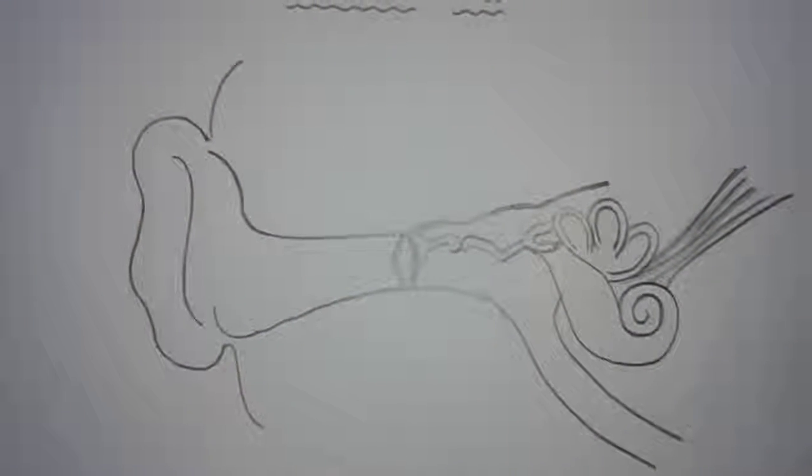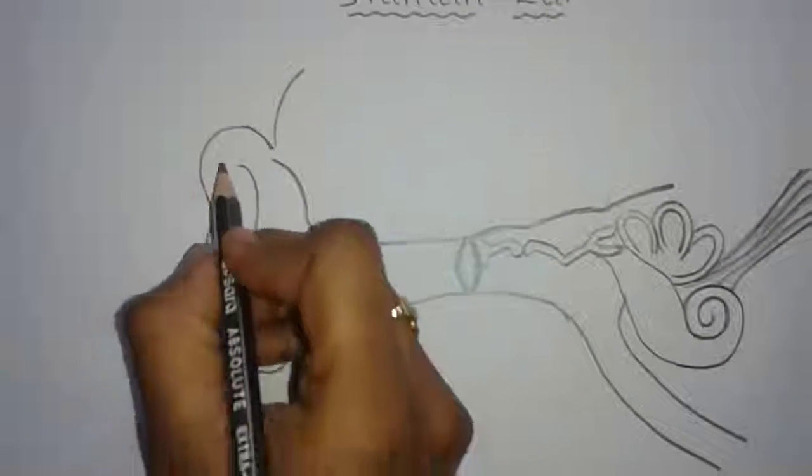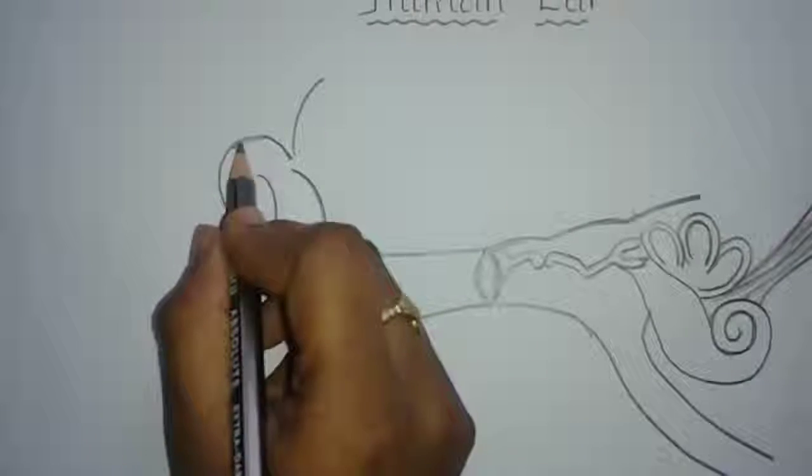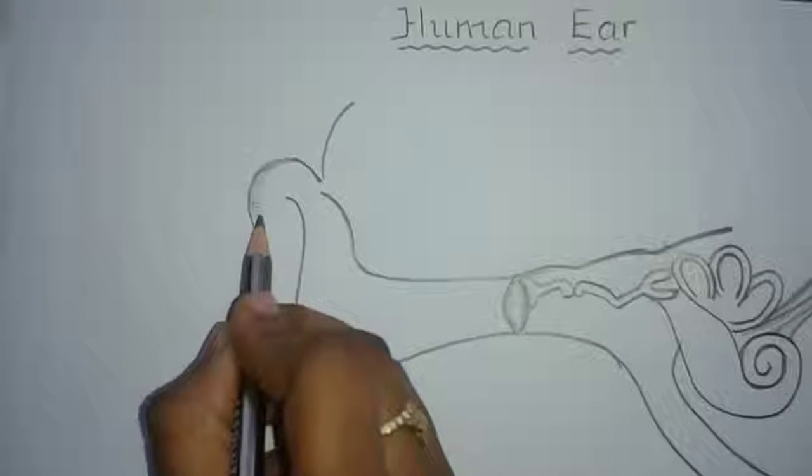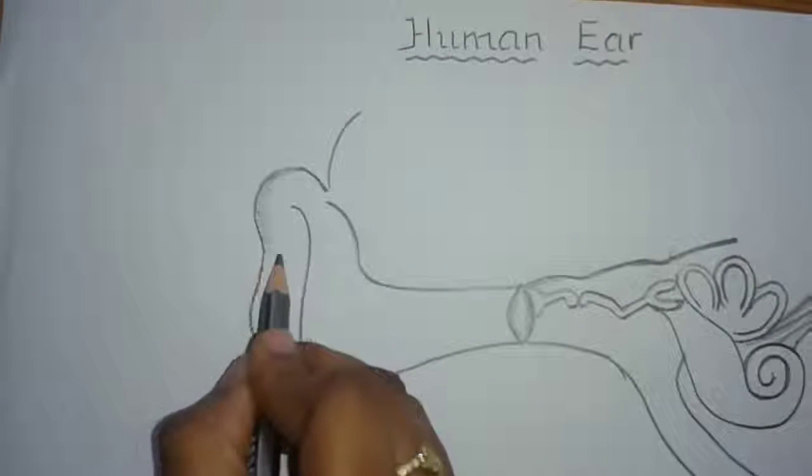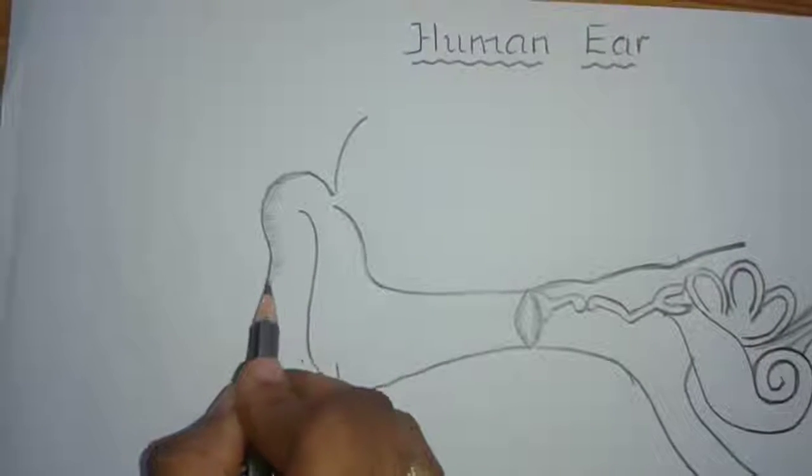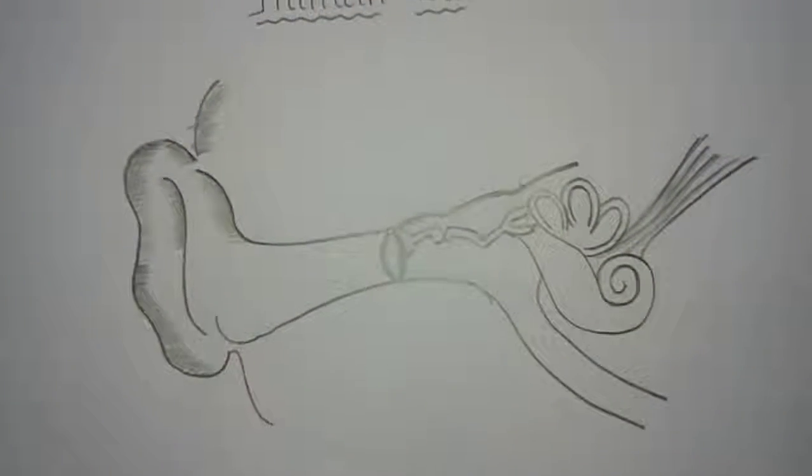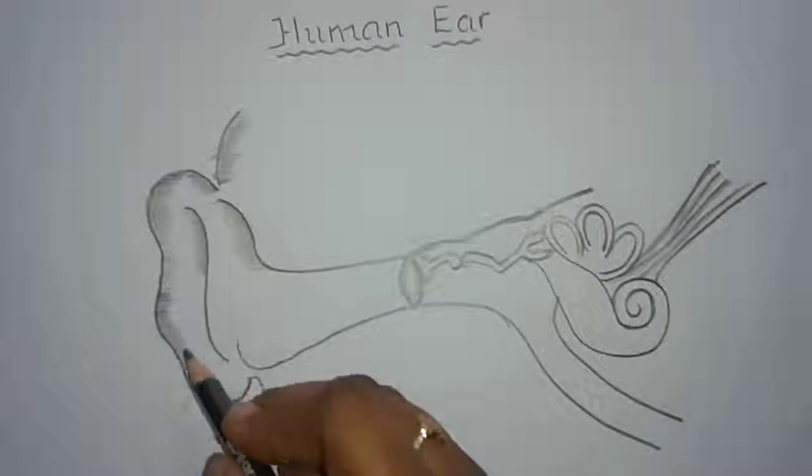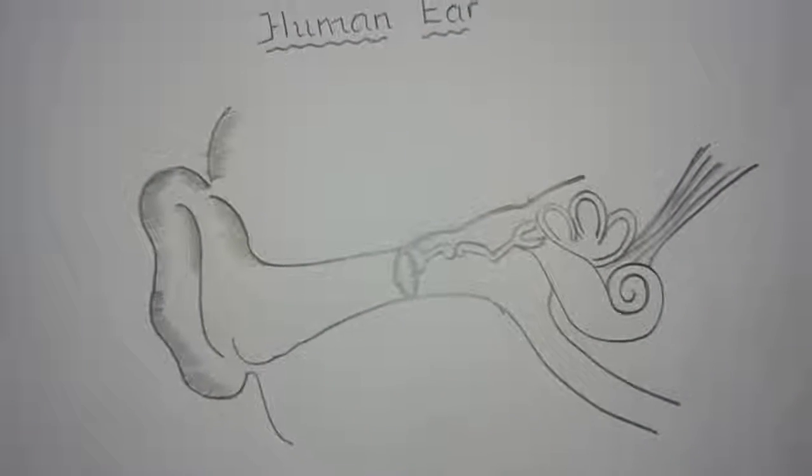Now let us make it more beautiful by shading like this. Shade the pinna like this to get the 3D dimension of that.